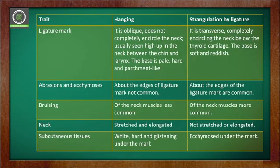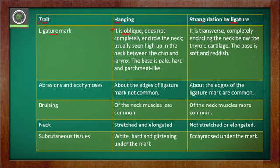We have made a table where the first column covers the traits and characteristics, then hanging, and then strangulation by ligature. The first trait is the ligature mark. In case of hanging, the ligature mark is oblique and does not completely encircle the neck — it is usually seen high up in the neck, between the chin and larynx. The base is pale and creates a hard, parchment-like appearance.